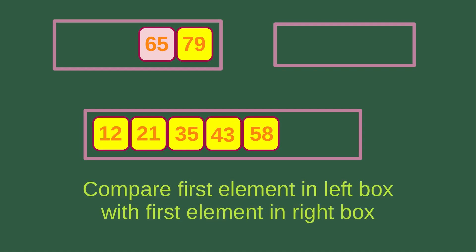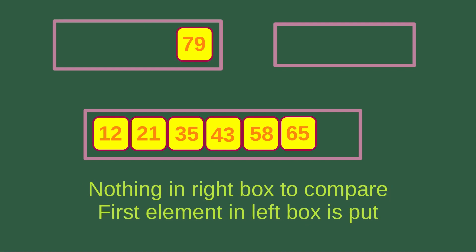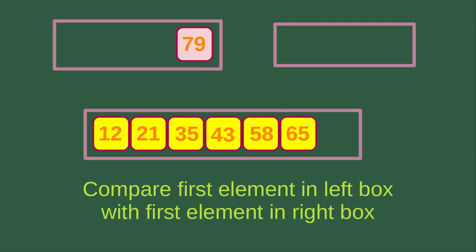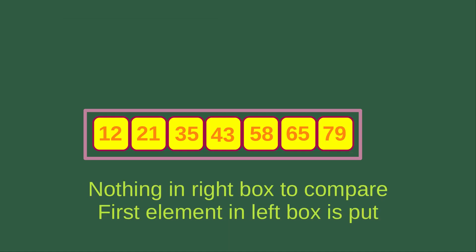Then we compare the first element in the left box, which is 65, with the right box, which has nothing. So we just put 65 into the larger merging box. Then the left box has only 79, and the right box has nothing. Again, we have nothing in the right box to compare, so we put 79 into the larger merging box.